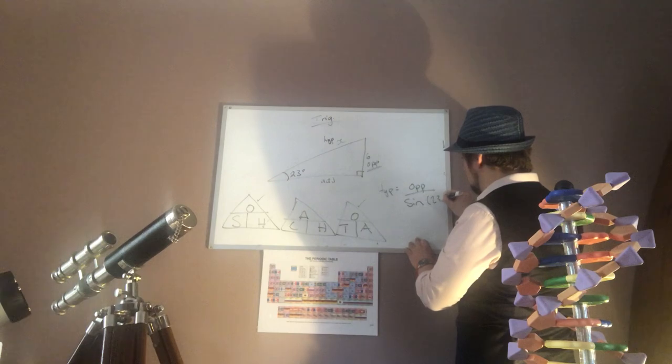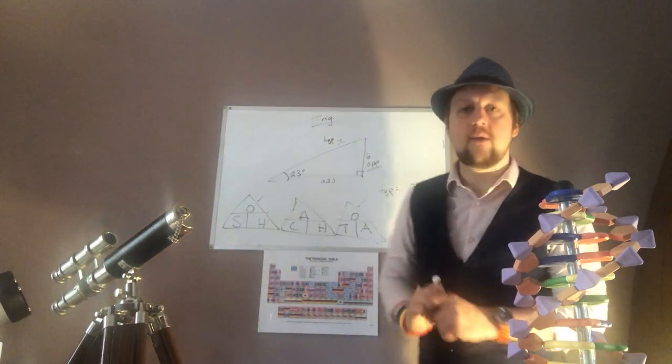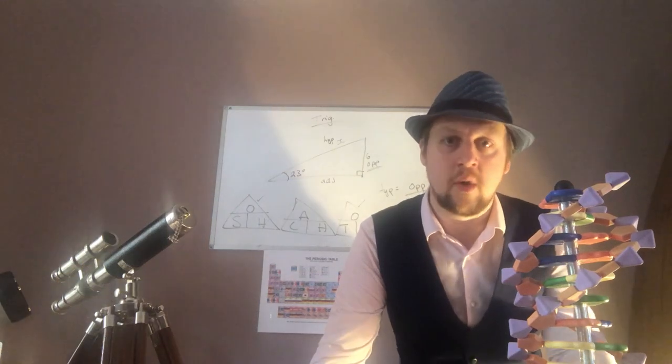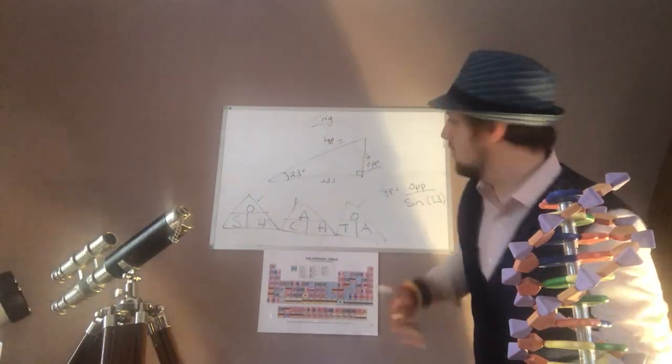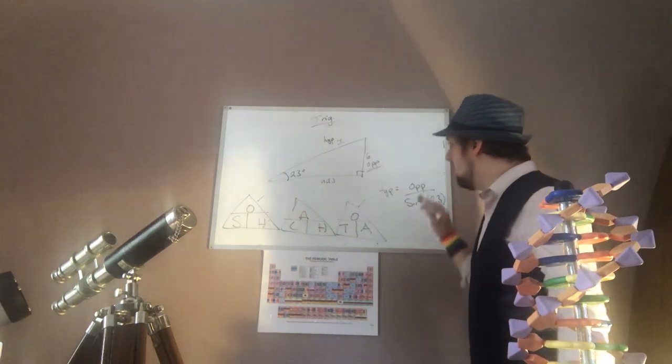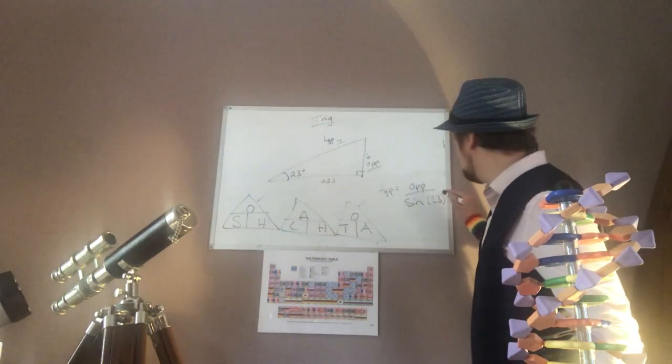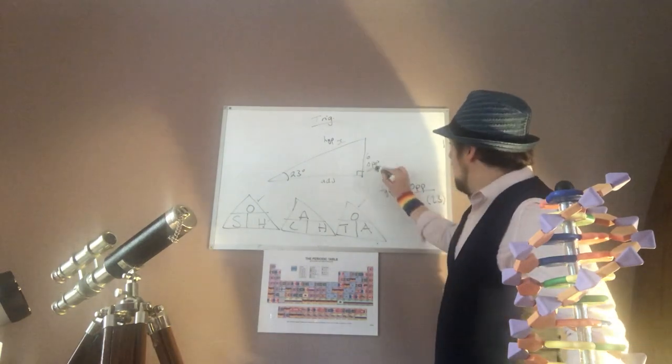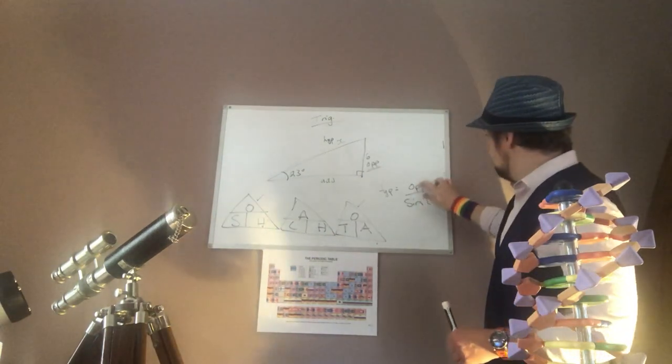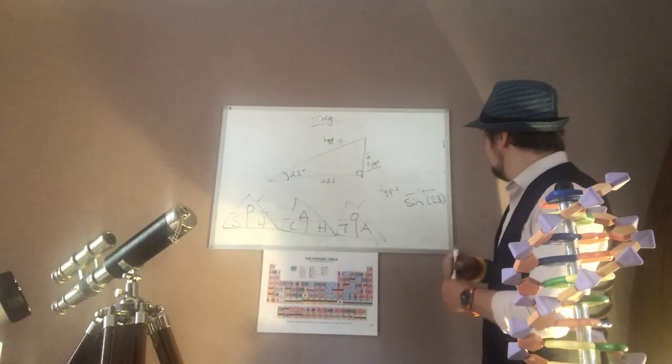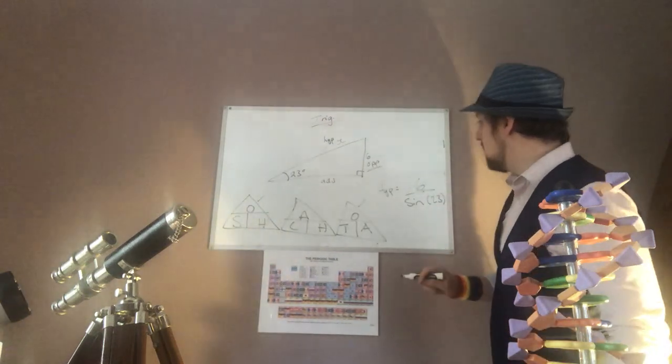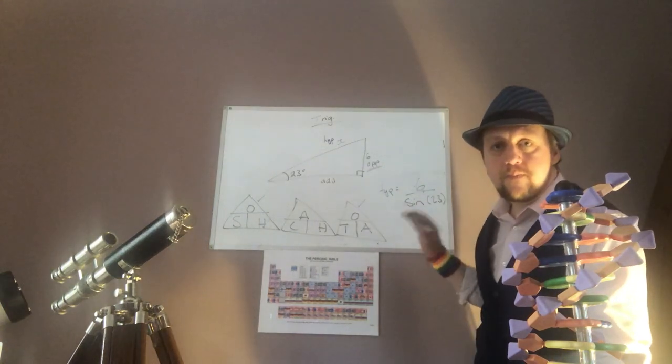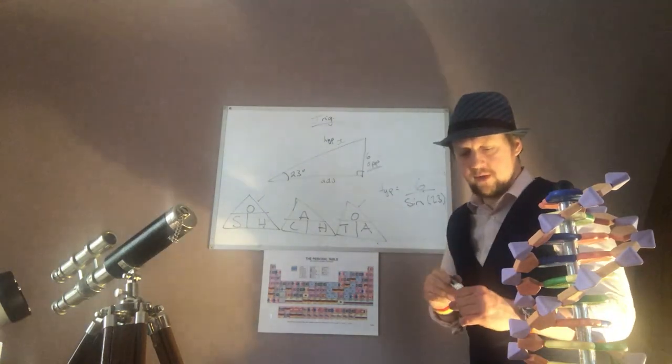23 degrees. Make sure your calculator is set into degree mode, which most of them are. If you go on and do radians and all sorts of other things, but again, keep it simple, degrees. And the value for the opposite is going to be 6. So plug those into your calculator. 6 divided by sine 23. And you will get the value for your hypotenuse.